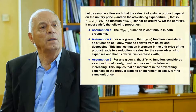Our next problem is building a monopoly model. Assume a firm whose sales S of a single product depend on the unit price P and advertising expenditures V. The function S cannot be arbitrary; it must satisfy the following properties. Assumption 1: S is continuous in both arguments. Assumption 2: for any given V, S considered as a function of P only must be convex from below and decreasing, meaning an increment in unit price leads to a reduction in sales. Assumption 3: for any given P, S considered as a function of V only must be convex from below and increasing, meaning an increment in advertising expenses leads to an increment in sales.